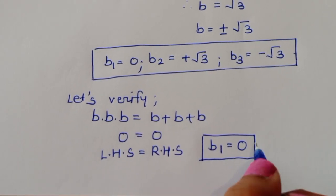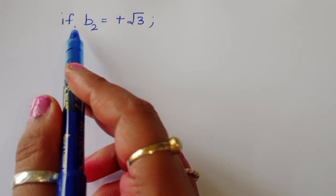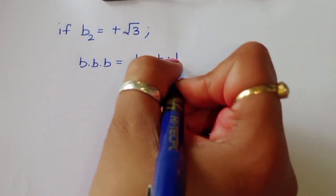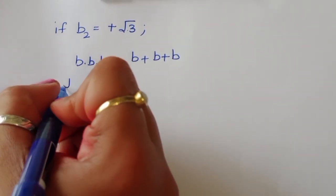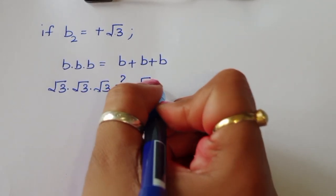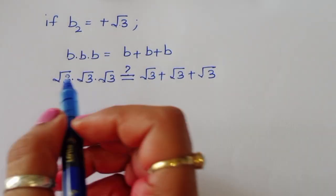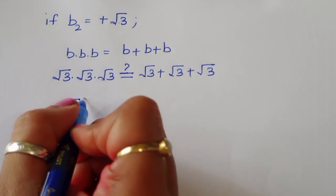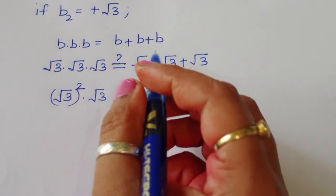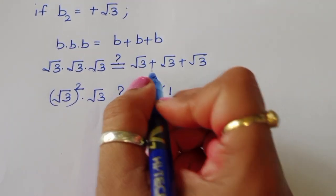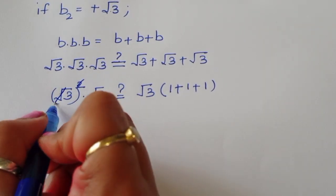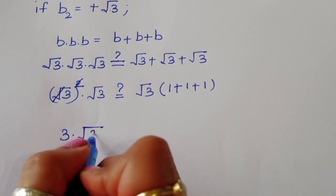Now verifying b2 equal to positive square root of 3. Substituting into b times b times b equals b plus b plus b: square root of 3 times square root of 3 times square root of 3 equals square root of 3 plus square root of 3 plus square root of 3. The left side becomes (square root of 3) squared times square root of 3. On the right, taking square root of 3 as common gives square root of 3 times (1 plus 1 plus 1). The square cancels with the square root, giving 3 times square root of 3.